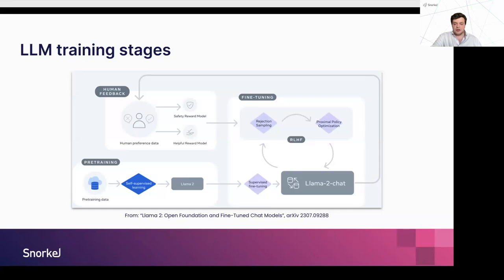We're going to focus on what you can do with pre-trained models. Pre-training is very expensive, and typically your best cost-to-performance ratio is achieved by taking an off-the-shelf generalist model and adapting it for your downstream tasks. Fine-tuning is typically done in two stages: you may start with supervised fine-tuning, otherwise called instruction tuning, and then move to more advanced alignment techniques such as reinforcement learning from human feedback, or preference optimization techniques like DPO. So training is a three-stage pipeline: pre-training, then fine-tuning, then further alignment.